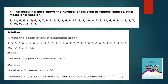Question 7: the following data show the number of children in various families — find mode and median. Writing observations in ascending order. Mode means the most frequently occurring observation — here 9 and 4 appear most times. Number of observations is 38, which is even, so median = (19th + 20th observation) divided by 2. The 19th and 20th values are both 7, so median = (7 + 7) / 2 = 7.